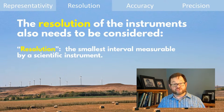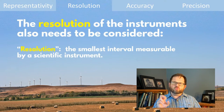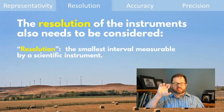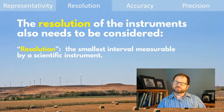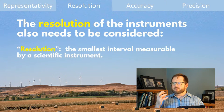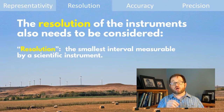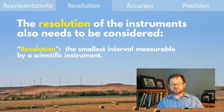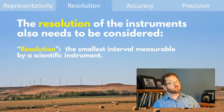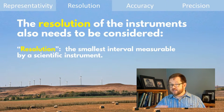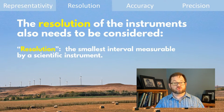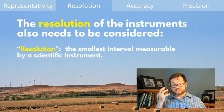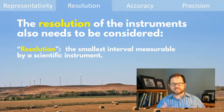Let's talk about another philosophy of measurements term: resolution. We're using this word differently than the resolution on the camera on your phone. This is the resolution of the instruments — the smallest interval measurable by a scientific instrument. For example, can your instrument tell the difference between winds that are 8 meters per second and 9 meters per second? Does it have a resolution as good as 1 meter per second? Can it distinguish between 8.0 and 8.1 meters per second — in other words, does it have a 0.1 meter per second resolution? What is the smallest difference it can consistently measure?